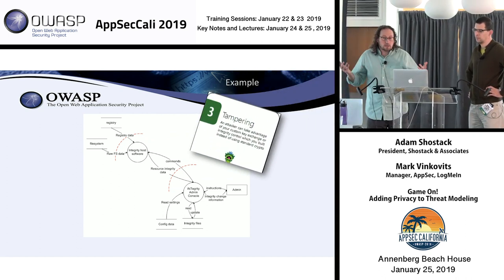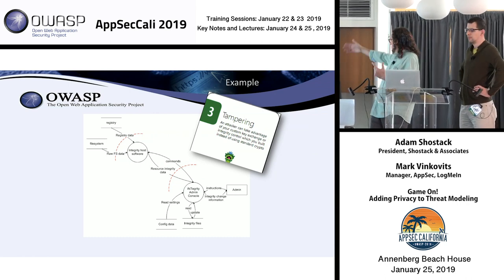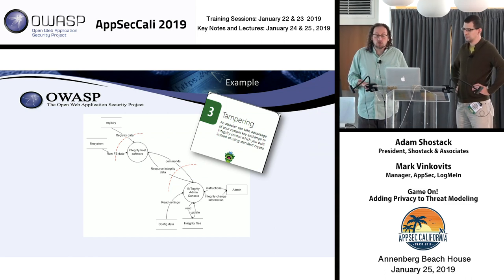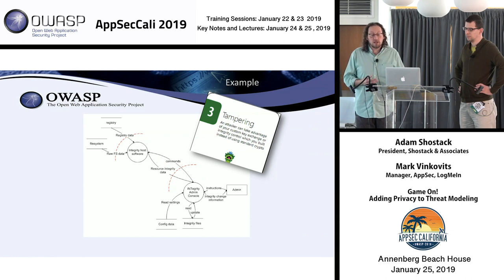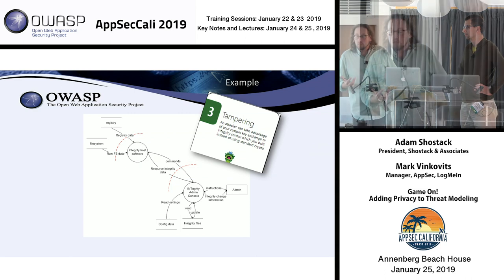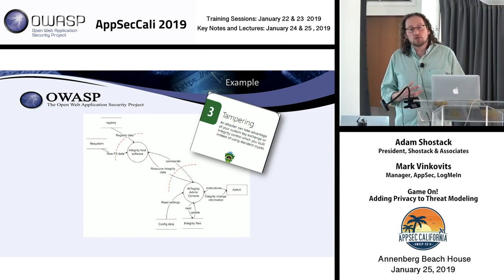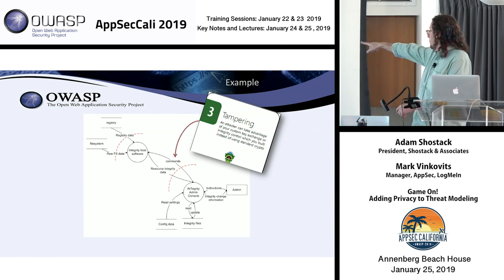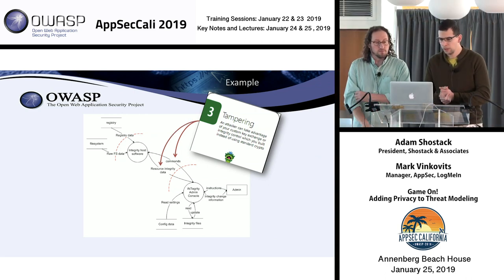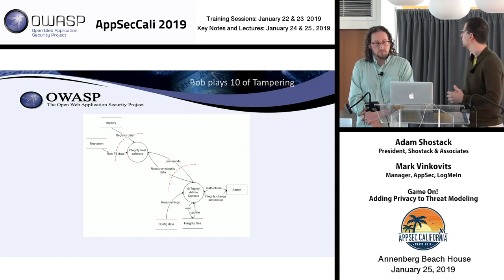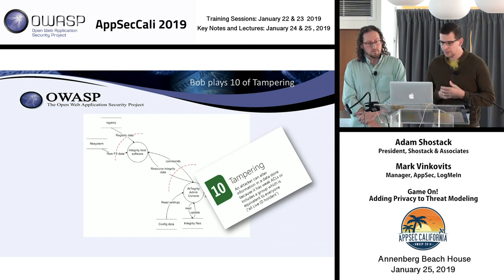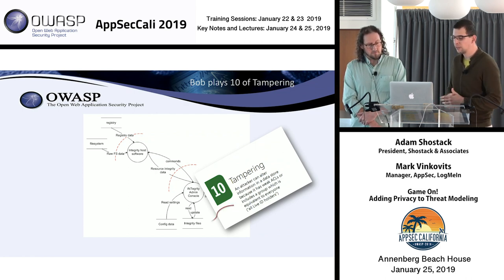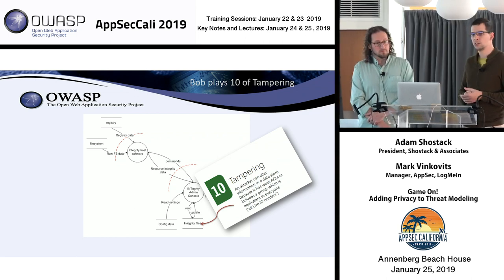For example, Alice might play the Three of Tampering. The card says: 'An attacker can take advantage of your custom key exchange or integrity control, which you built instead of using standard crypto.' If Alice is a software or network engineer, she might not have that knowledge — but the hint is on the card, and she can say: 'Maybe that applies to this network connection right here.' Bob plays the Ten of Tampering — 'An attacker can alter information in your information store' — and notes that weak ACLs on the file store could allow someone to alter configurations. Charlie plays the Five of Tampering, noting replay attacks could apply to the integrity dataflow.